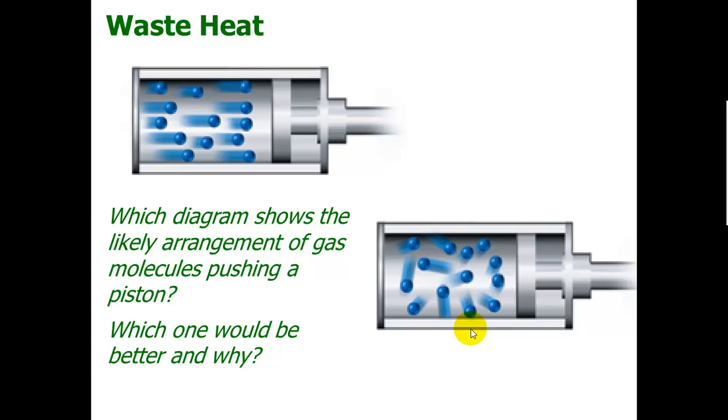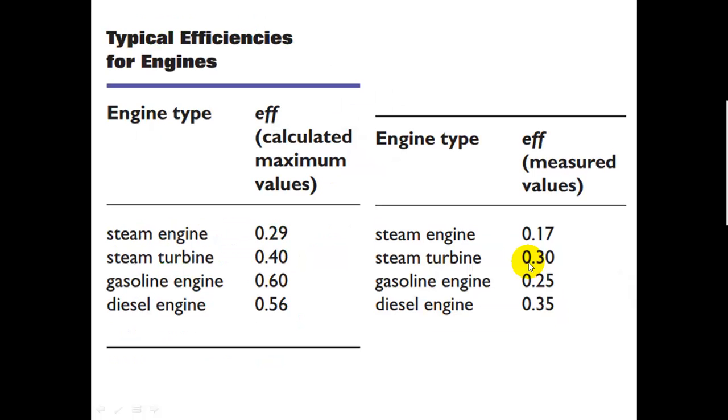If you want to think about when your car is operating most efficiently, when it's converting most of its energy into work, it's when the car is already heated up. Before that, a lot of the energy from the burning fuel is going into heating the walls of the cylinder, as opposed to pushing the piston. Back to these values: measured values are much lower. For a gasoline engine, 25% efficiency. Steam engines, only 17%. Diesel engines are more efficient, as you can see here. We have some advantages we can talk about in class.